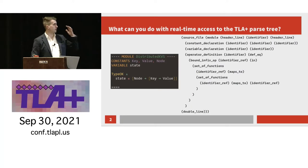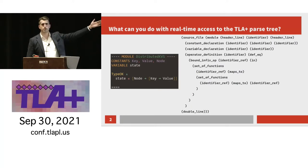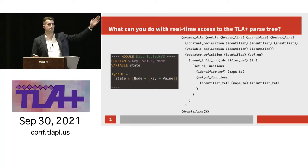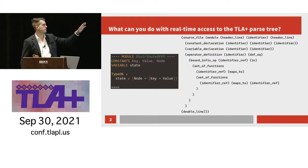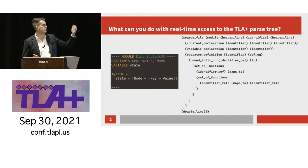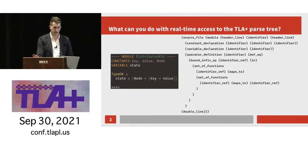We have an example here. This is some TLA+ code on the left, and on the right is the parse tree. You can just kind of see the loose correspondence. You have some constant declarations, operator definitions, et cetera.